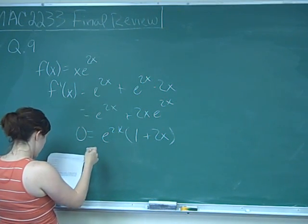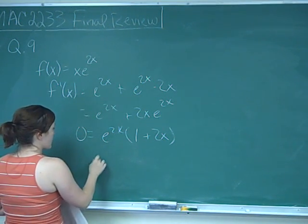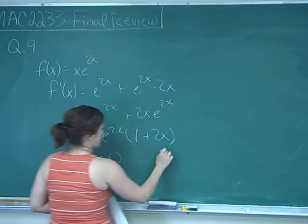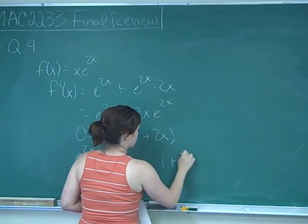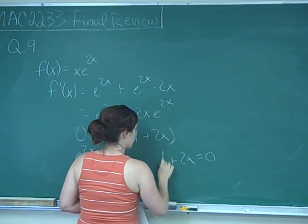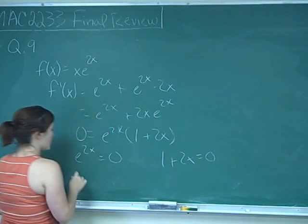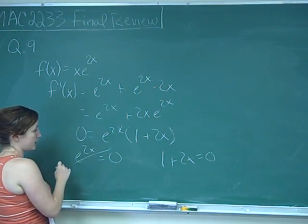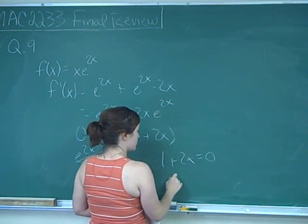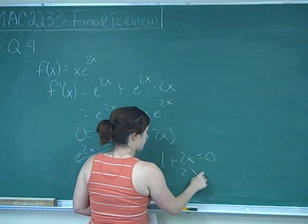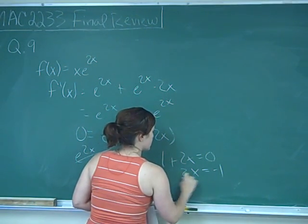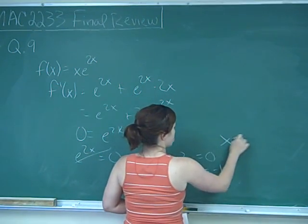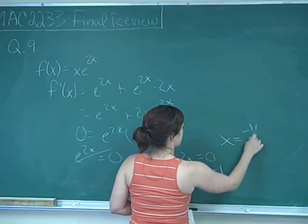So e to the 2x equals 0, and 1 plus 2x equals 0. We know e to the 2x will never be 0, so that gets thrown out. Then we solve this — subtract 1 from both sides and divide by 2 — so you get x is equal to negative 1 half.